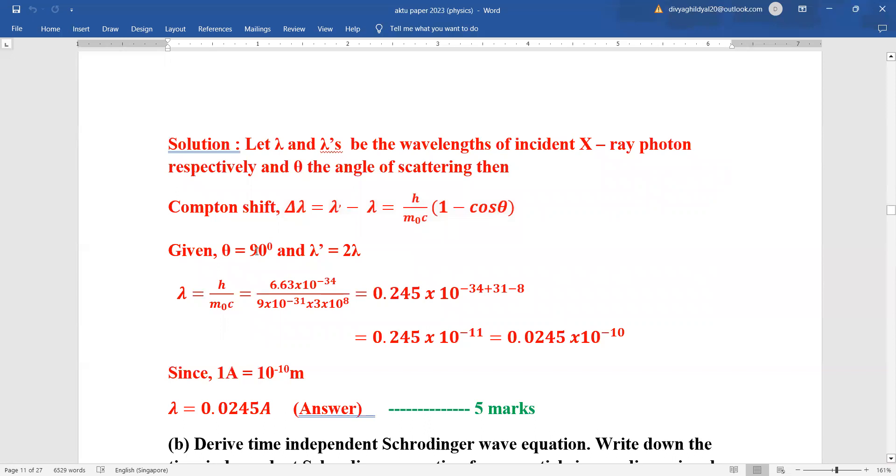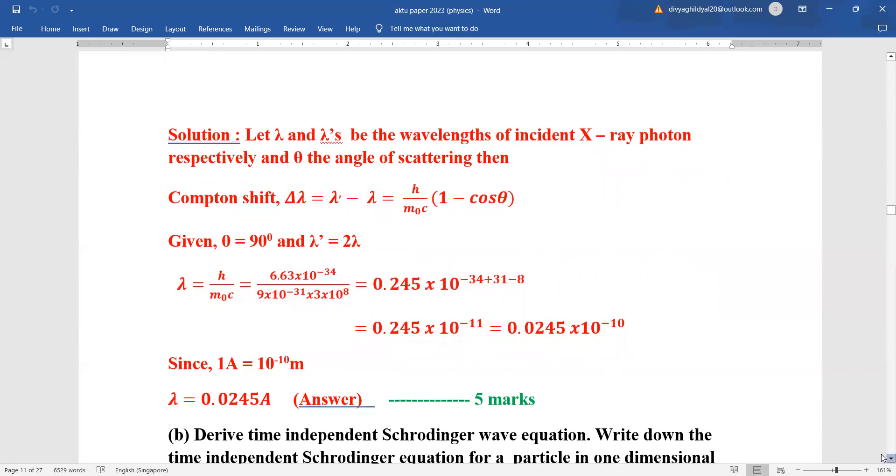The formula is del lambda equals h upon m not c into 1 minus cos theta. They have given theta as 90 degree. Lambda is suffering a change of wavelength of 2 lambda and h upon m not c. Finally, we are putting the values. Then we can change the answer to angstrom or meter or centimeter. This will not affect the numerical value of my answer. Here I can easily get my one mark if I write the formula. If I put the correct values in the formula, I can get around one and a half marks. Remaining marks I will get if I solve these powers correctly and give the correct numerical value.